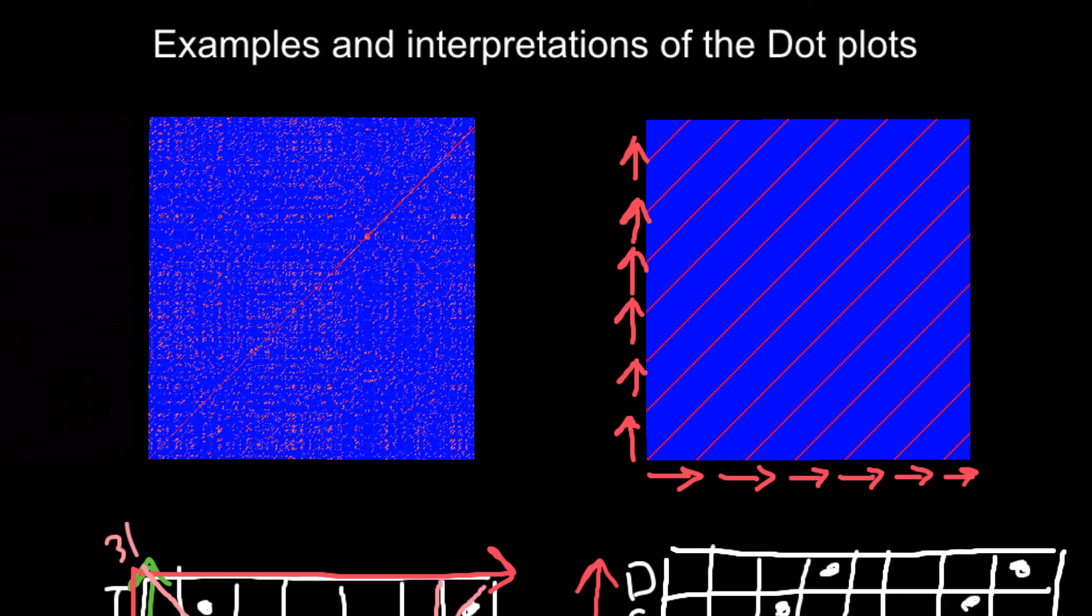And why it is important for us to compare two sequences? First of all, we do it in order to find similarity and homology, and we need it because, for example, if we study human genetics, we cannot make experiments on human beings. For example, delete one gene and see how this would affect the health.